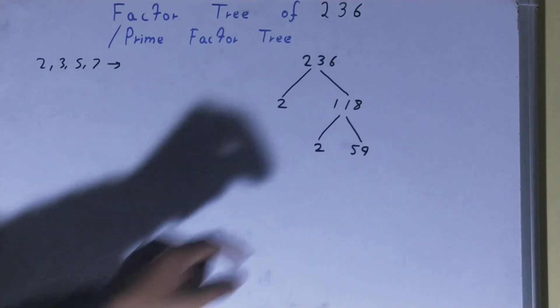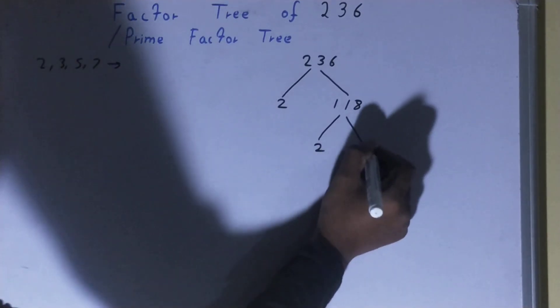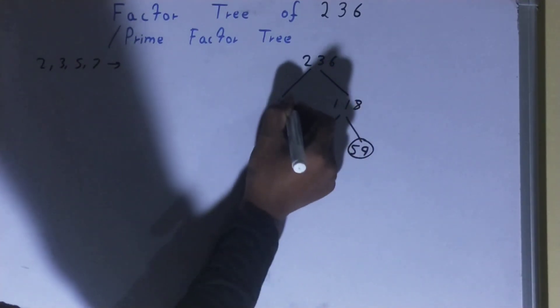Now do we need to factorize this 59 further on? The answer is no, because 59 is a prime number. So your work is done over here. The only thing you need to do is circle the ending nodes or the terminating nodes, and that will be your required factor tree.